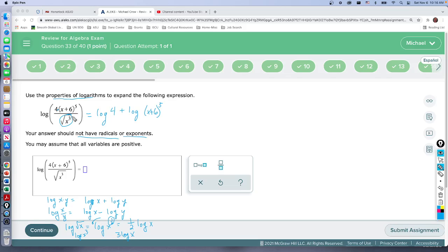Minus the log of square root of x to the third. So that's sort of the first round - anything multiplied. Now if I was multiplying something in the denominator, I think both would be subtracted.